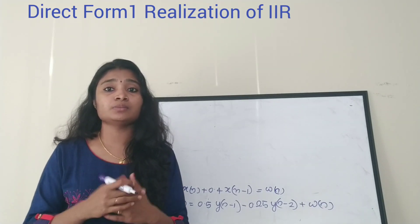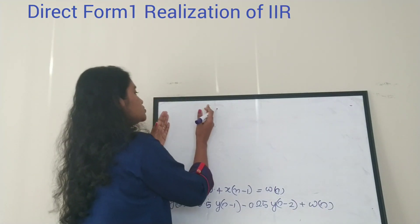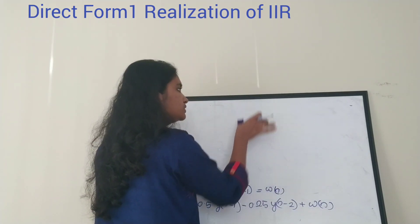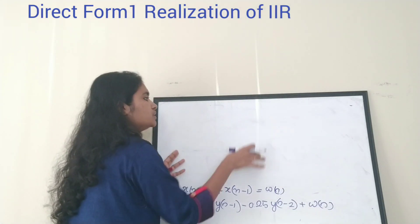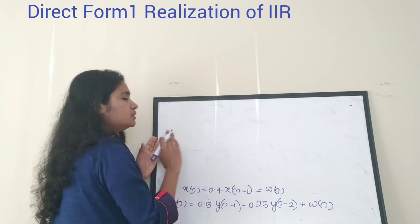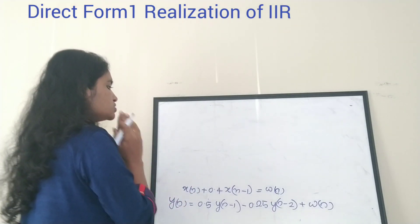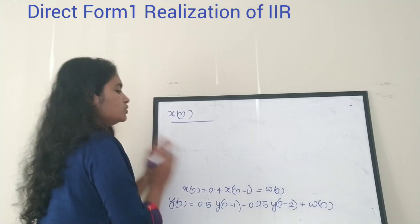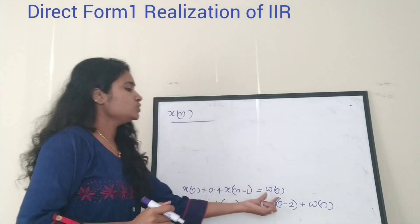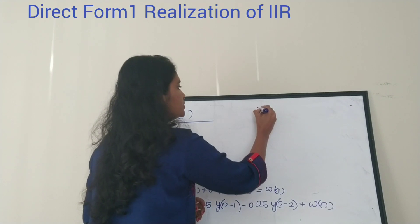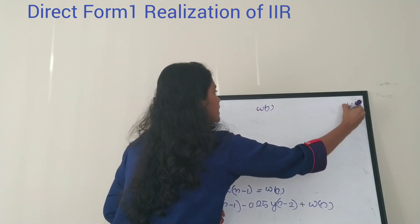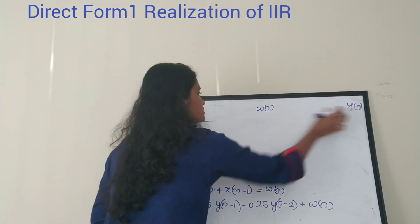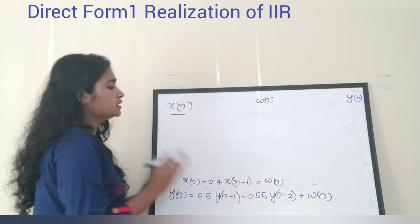The x(n) terms will come on the left side, y(n) terms on the right side, and w(n), the intermediate variable, will come in the middle. That is the general convention. So first write x(n) as your input, then w(n) in the middle, and y(n) at the output side.